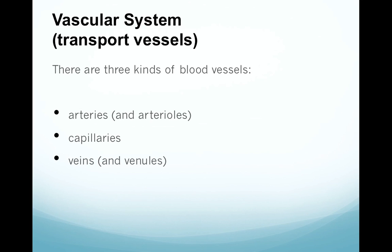The vascular system is basically the transport vessels, and there are three different kinds of blood vessels that we have in our bodies: arteries, capillaries, and veins. Arteries, as they branch off and get smaller and smaller, are going to be called arterioles, and then veins, as they get smaller and smaller, are called venules. But basically those three kinds of blood vessels are arteries, capillaries, and veins.